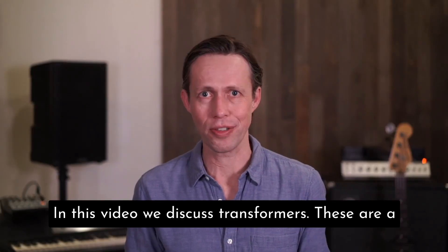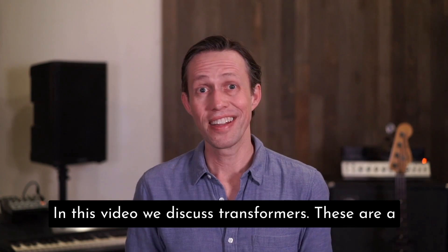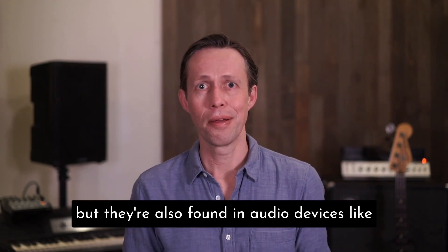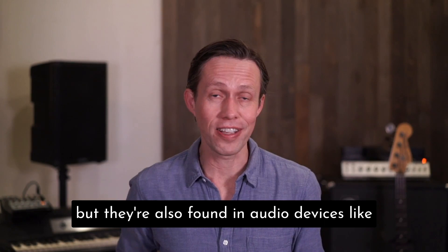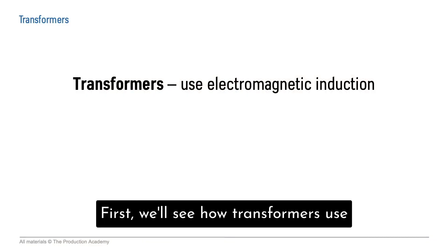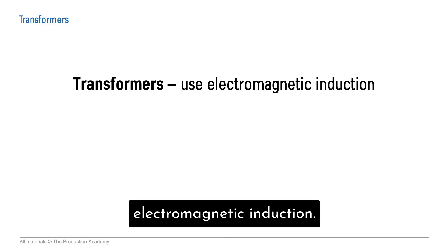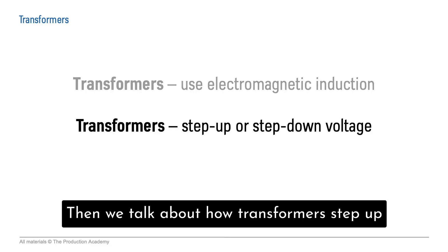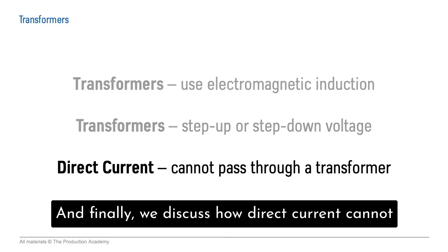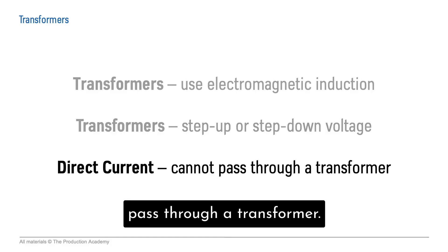In this video, we discuss transformers. These are a critical part of electrical distribution systems, but they are also found in audio devices like DIs and splitters. First, we'll see how transformers use electromagnetic induction. Then, we talk about how transformers step up or step down voltage. And finally, we discussed how direct current cannot pass through a transformer.